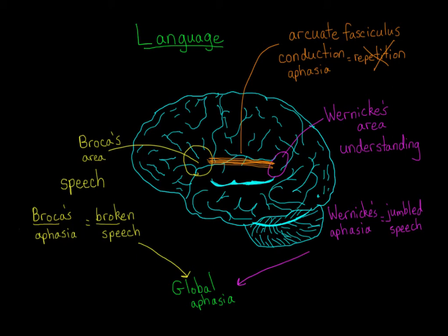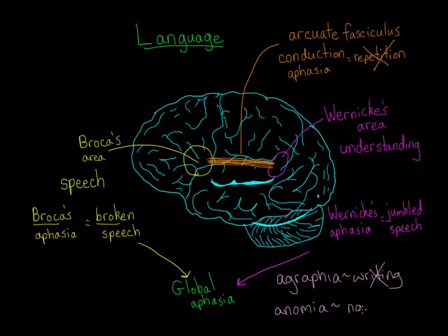Once you think about how many language-specific functions you do every day, you might wonder how many different types of aphasia there are — and the answer is a lot. We have agraphia, which is the inability to write; anomia, which is the inability to name things; and other specific difficulties in reading, spelling, grammar, and pronunciation — all sorts of things you may not even realize you do effortlessly with a healthy brain. But Broca's aphasia and Wernicke's aphasia are the most common.